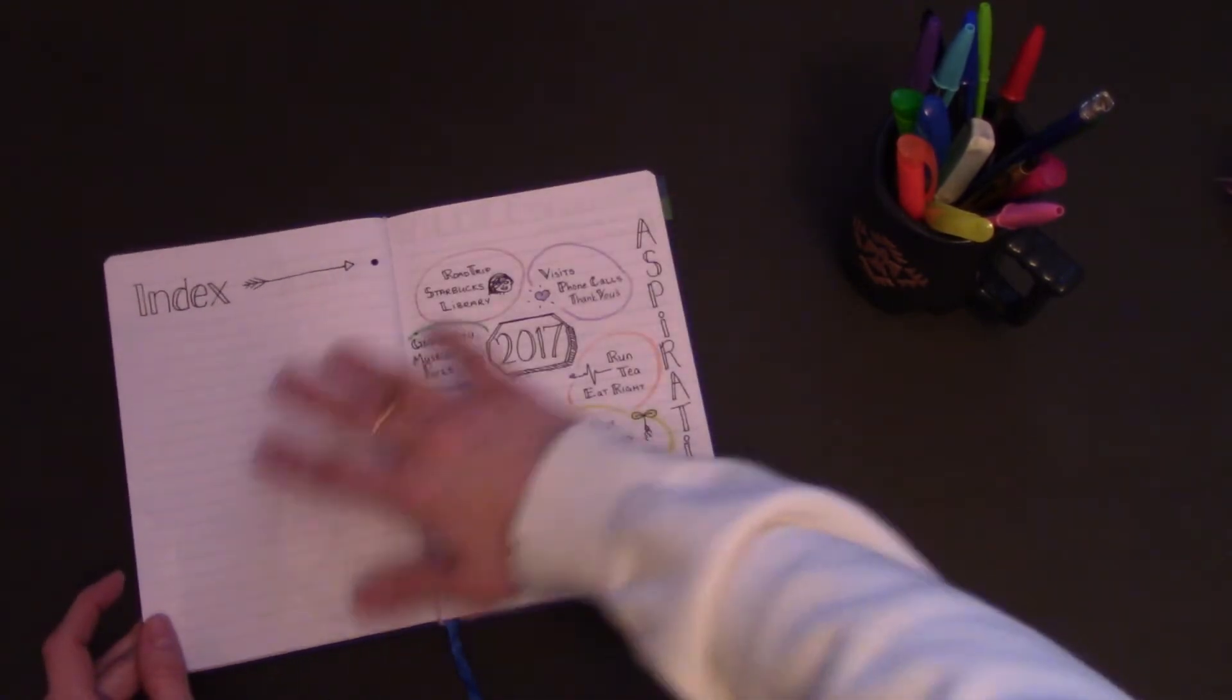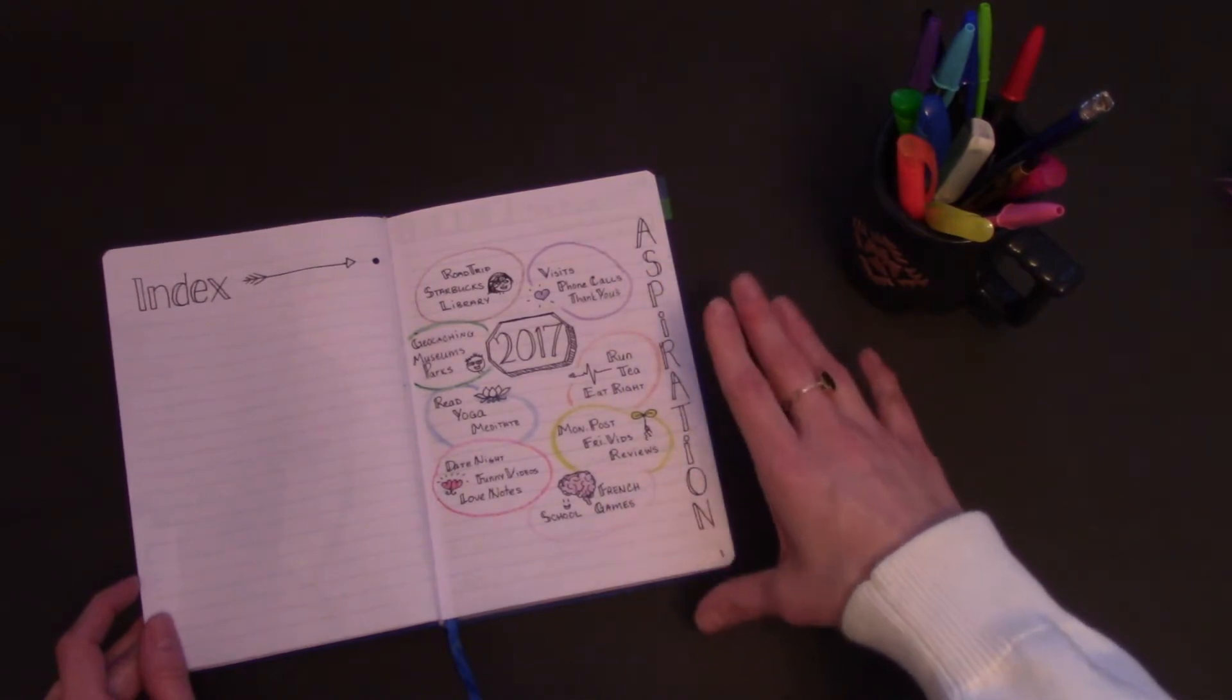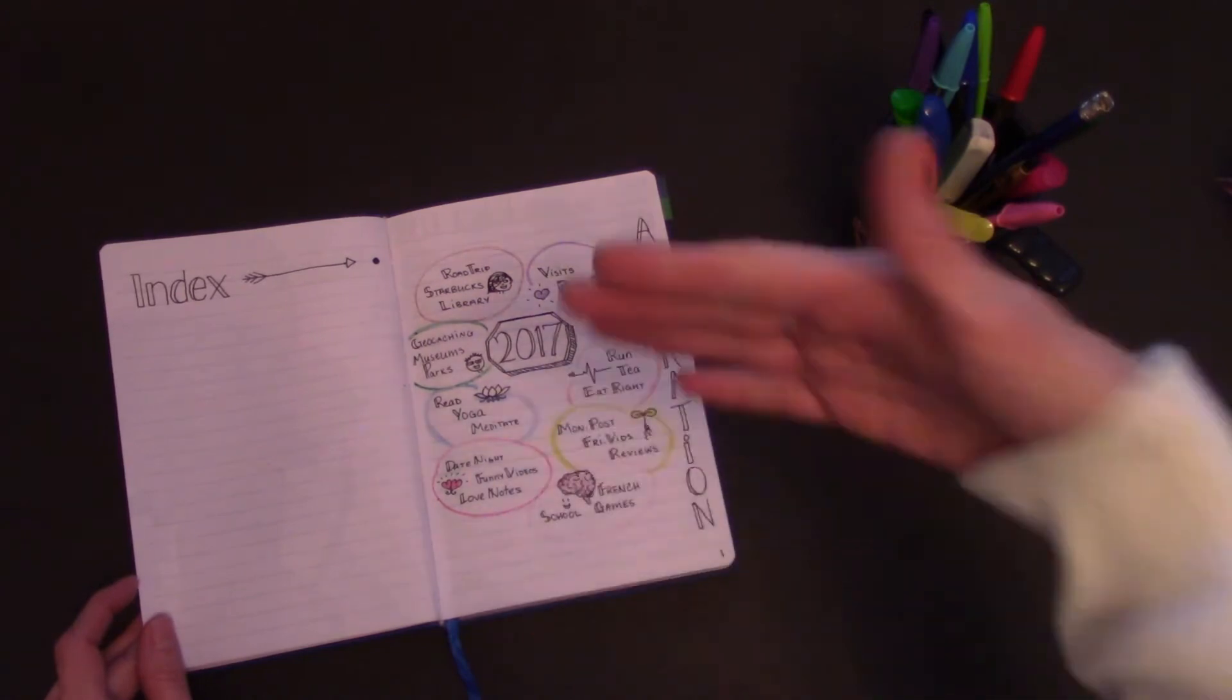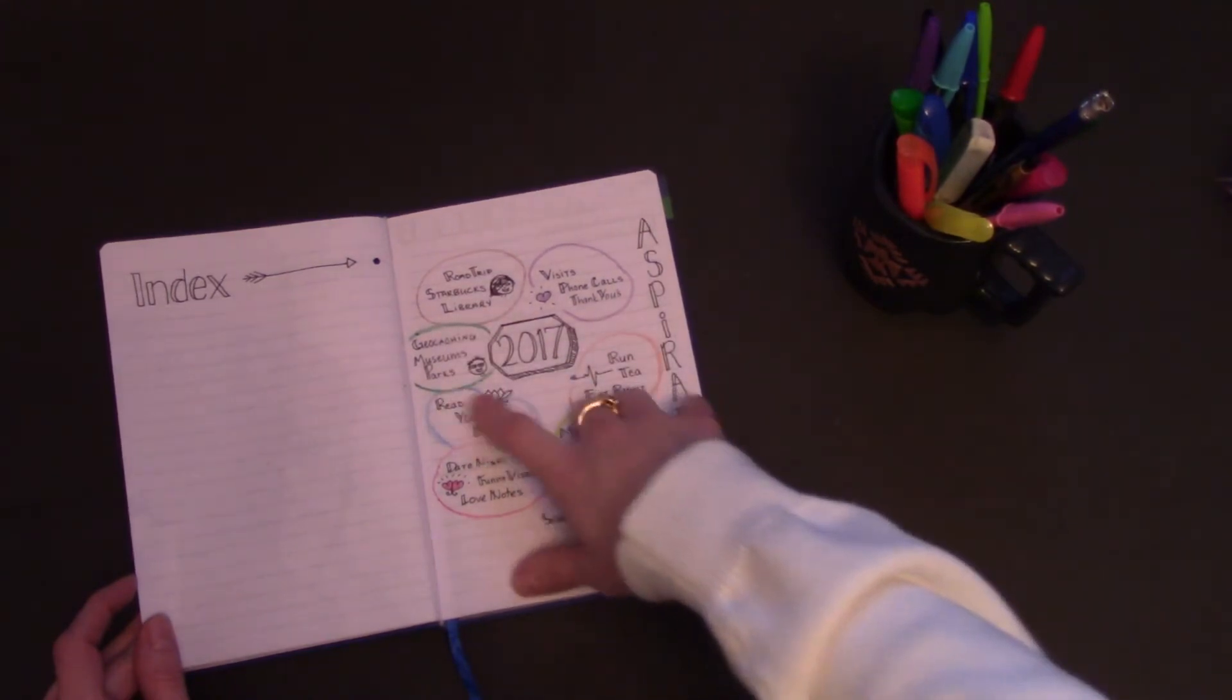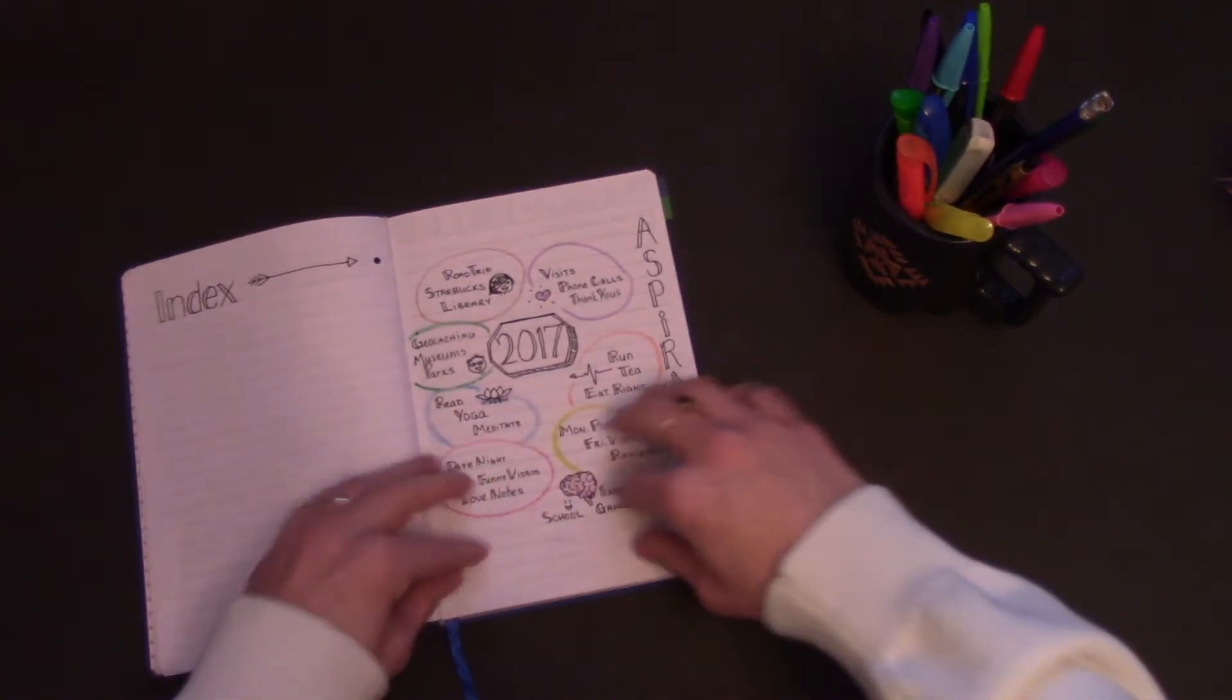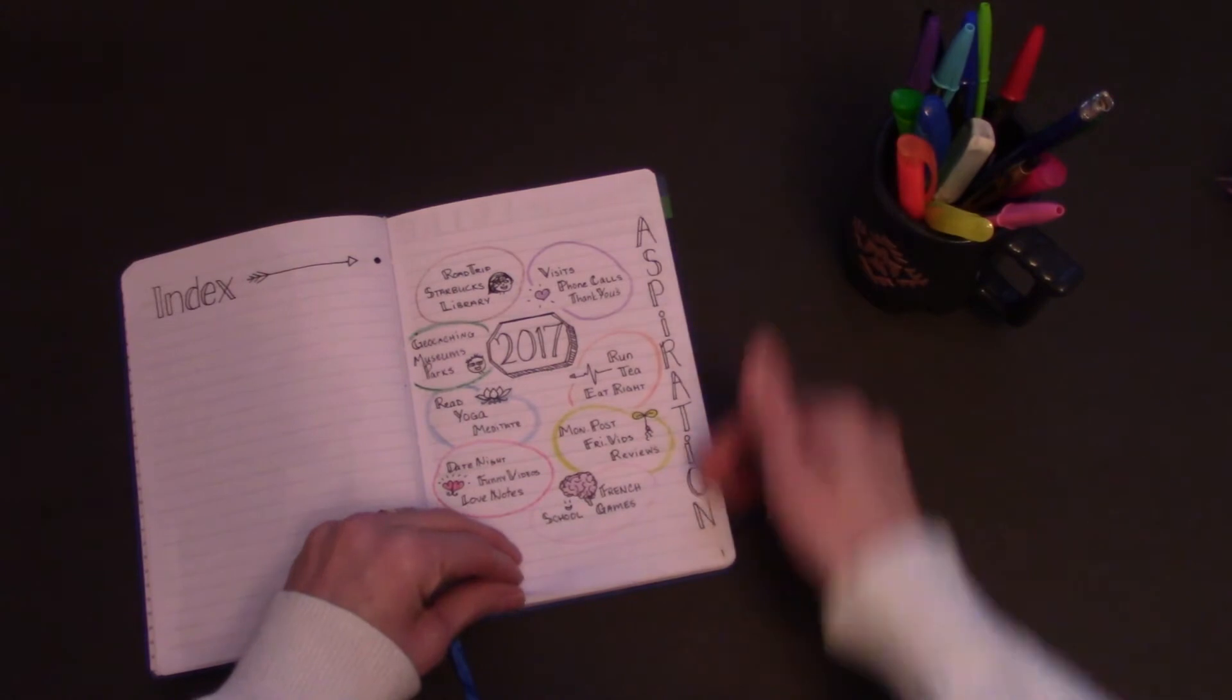So I start after three pages of index with my aspirations. I use aspirations instead of resolutions because they work better for me. They're more positive and it's more like an affirmation, more aspiring to do these things so I can do these things with my daughter and these things with my son, these things for my own personal mental well-being, you know, each segment of things that I know I can aspire to.